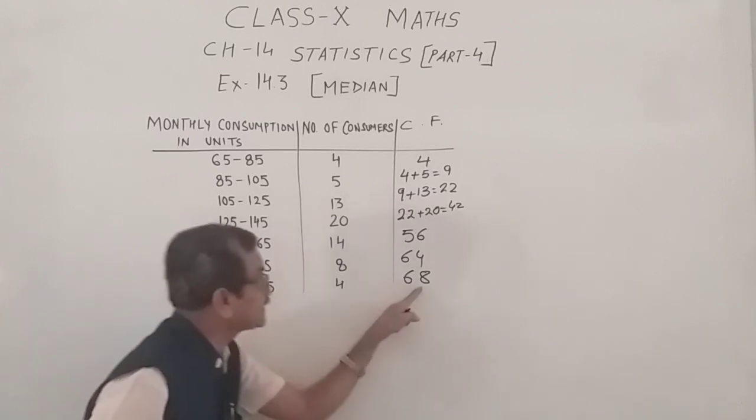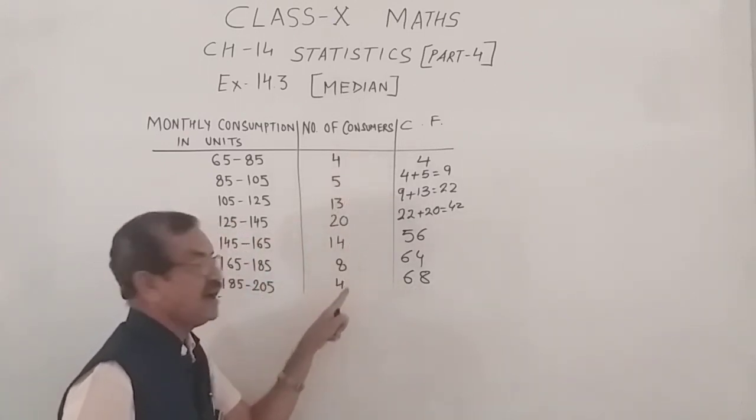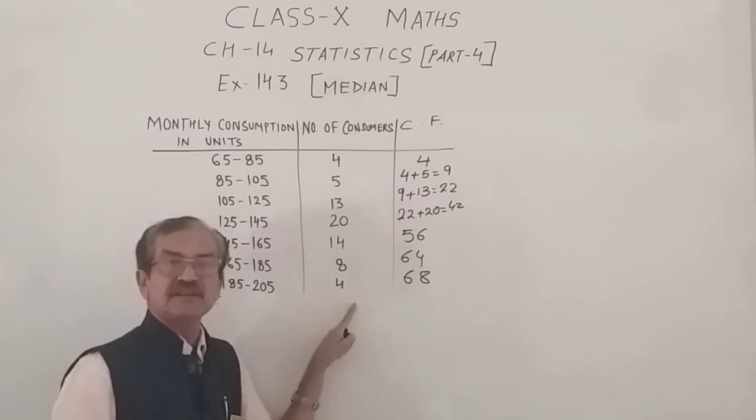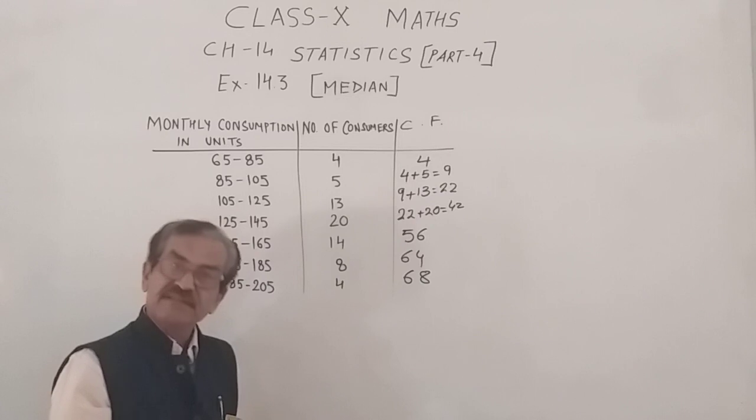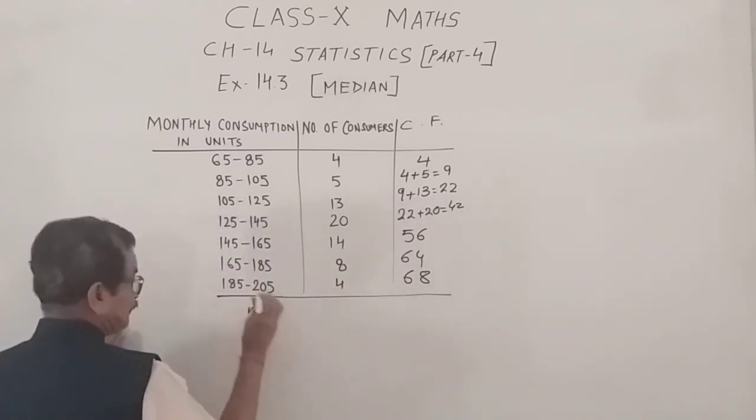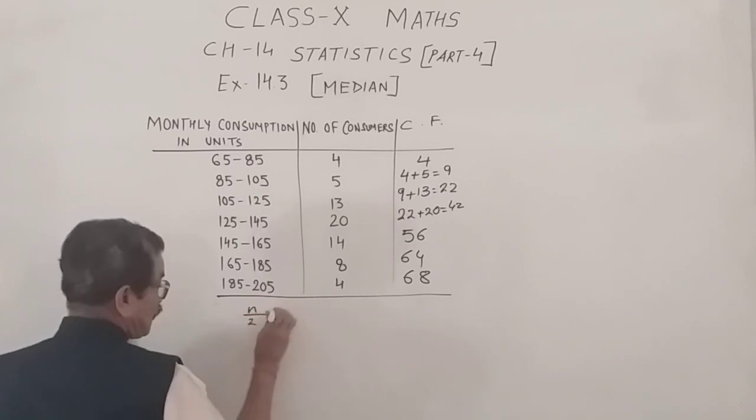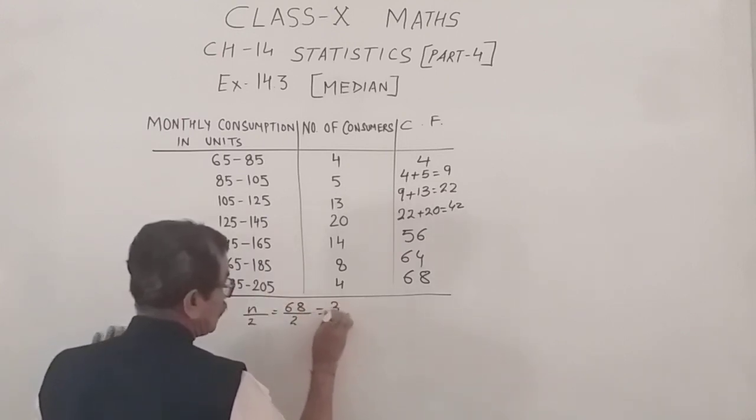Please note that 68 is the total number of terms. That is, sigma fi, the sum of all the frequencies. If you add them up, the total will be 68, which is taken as number of terms. Now, first of all, we will find half the number of terms. N by 2, 34.